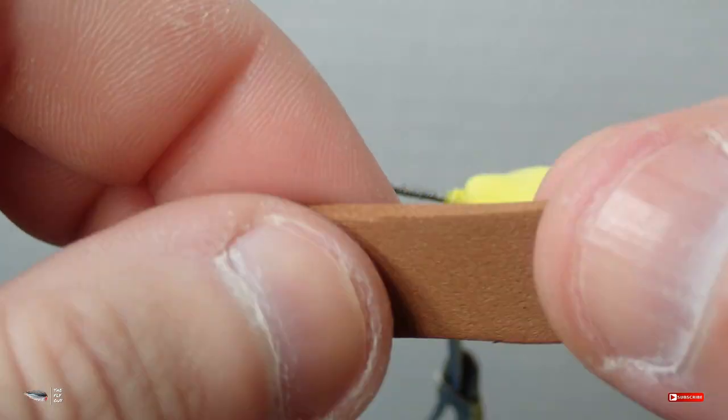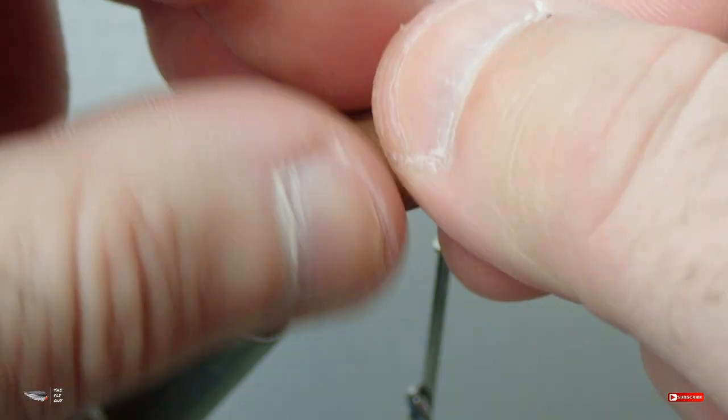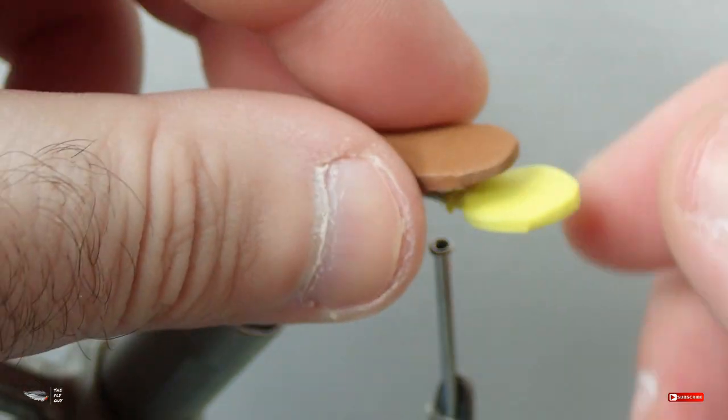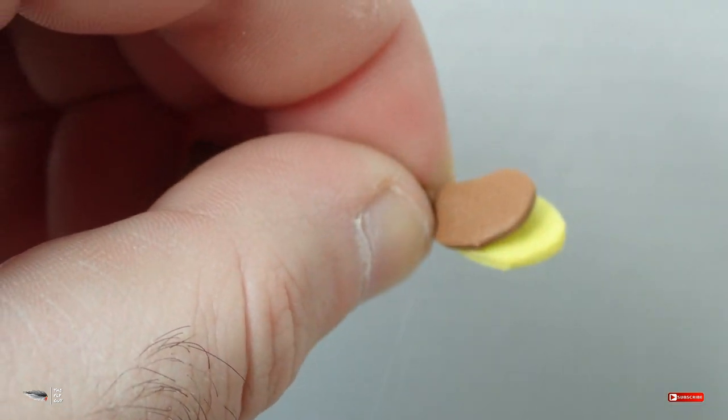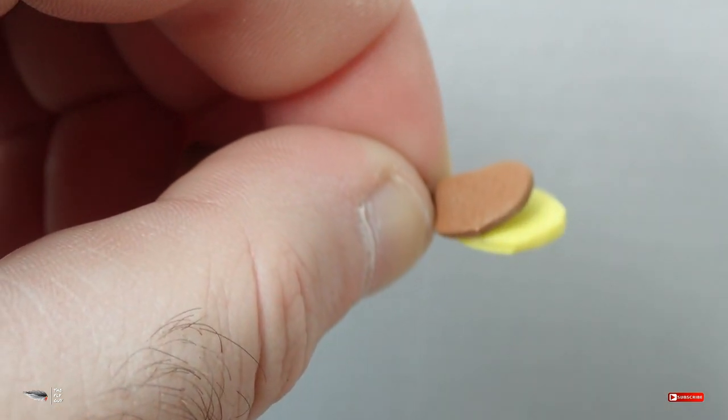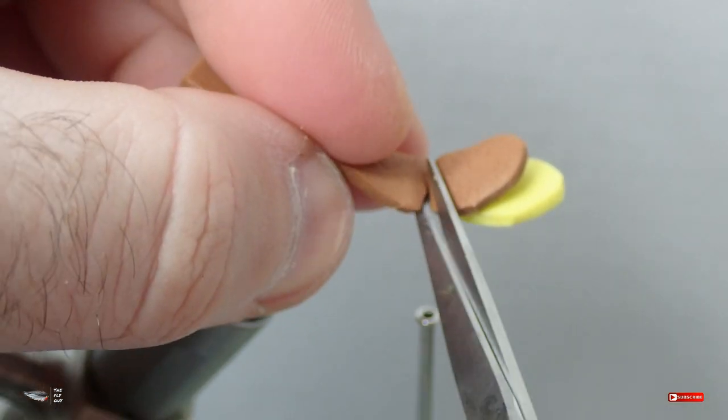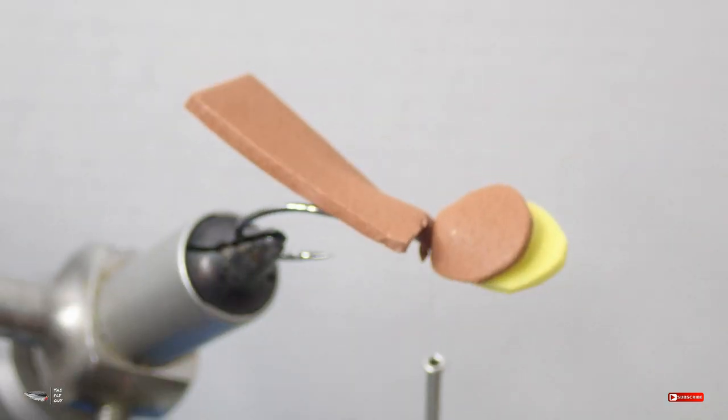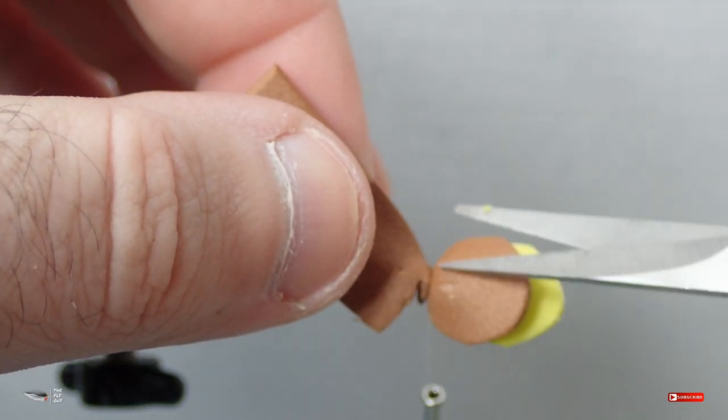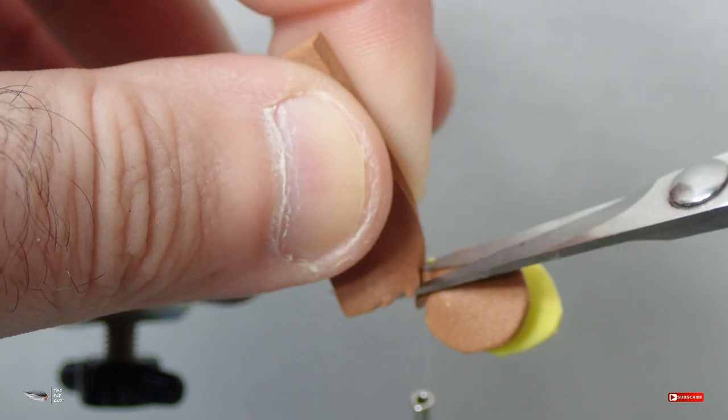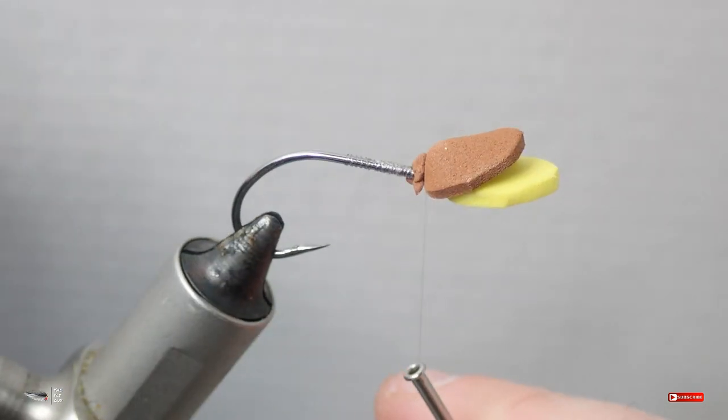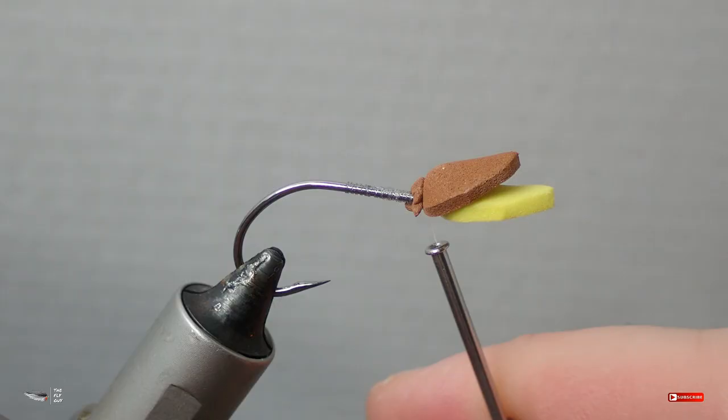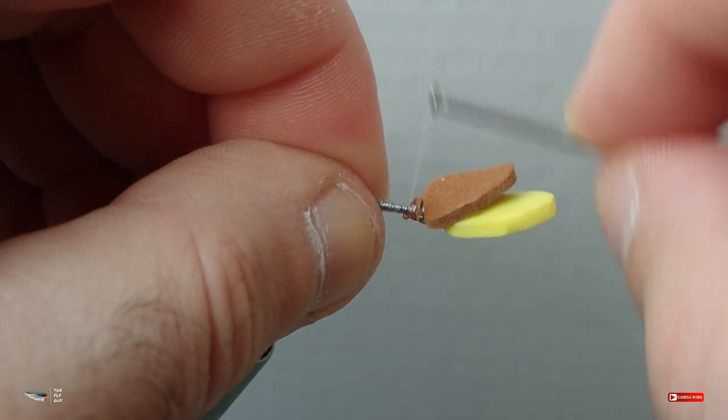Once in place, you'll go ahead and wrap that down, tie it in, trim that foam off, and you're going to repeat this same process. Each foam strip that you tie in, you will tie it in just a little bit shorter than the previous piece of foam that you tied in, so in the end the foam pieces will taper down in size the closer you get to where you're actually tying your fly on the hook.